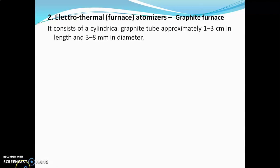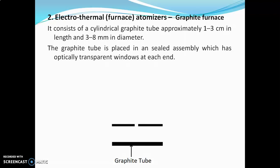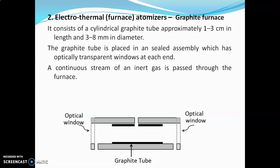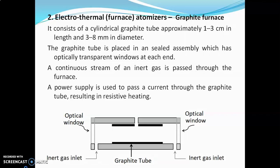The graphite furnace consists of a cylindrical graphite tube approximately 1 to 3 centimeters in length and 3 to 8 mm in diameter. The graphite tube is placed in a sealed assembly which has optically transparent windows at each end. A continuous stream of inert gas — for example, argon — is passed through the furnace via inert gas inlets. The power supply passes a current through the graphite tube, resulting in resistive heating. A sample inlet and optical path are incorporated into the assembly.